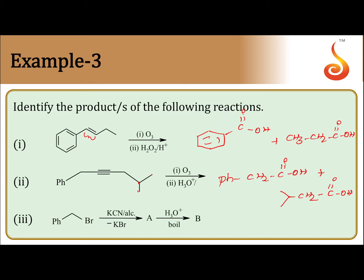If an alkyne is subjected to reductive ozonolysis and the alkyne is an internal alkyne, erase the triple bond and convert both carbon atoms forming the triple bond to carboxylic acids. If it is a terminal alkyne, one carbon atom will be converted to a carboxylic acid and the other carbon will be converted to carbon dioxide.